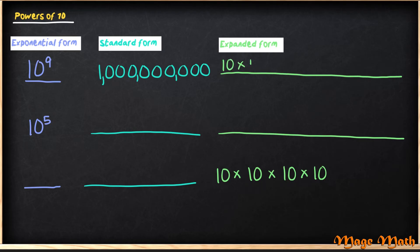Next, I need to write the expanded form, which is just multiplying 10 nine times by itself.